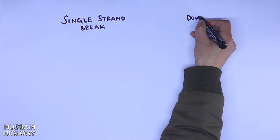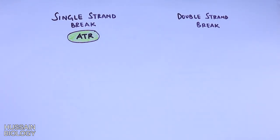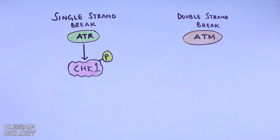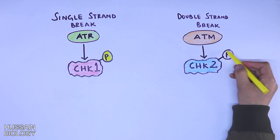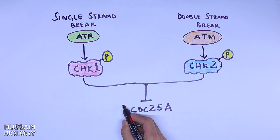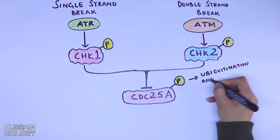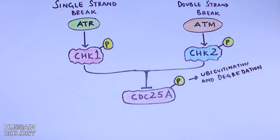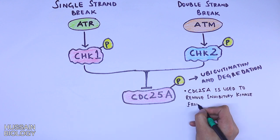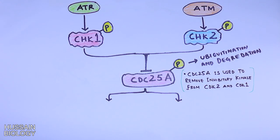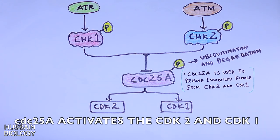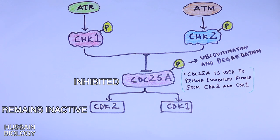The above process is for double-strand DNA breaks and is p53-mediated. There are also checkpoint pathways for single-strand and double-strand DNA breaks through CDC25A. Single-strand DNA breaks are sensed by ATR, and double-strand breaks by ATM. ATR phosphorylates and activates CHK1, while ATM phosphorylates CHK2. Both CHK1 and CHK2 act on CDC25A, phosphorylating it and marking it for degradation. Prior to this, CDC25A removes inhibitory phosphates from CDK2 and CDK1, activating them.